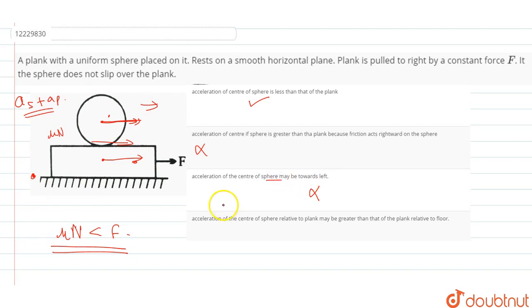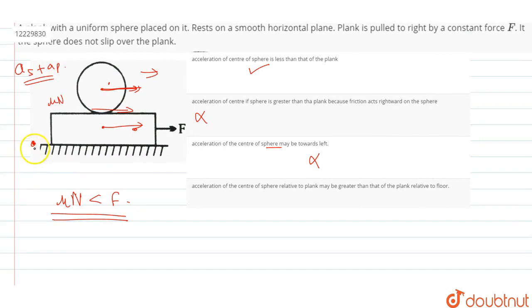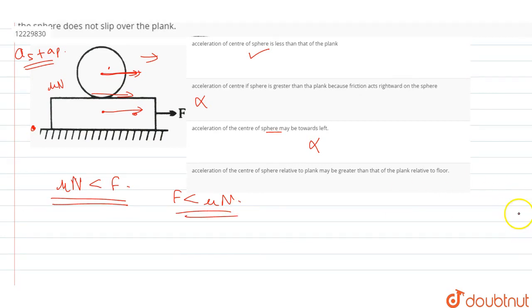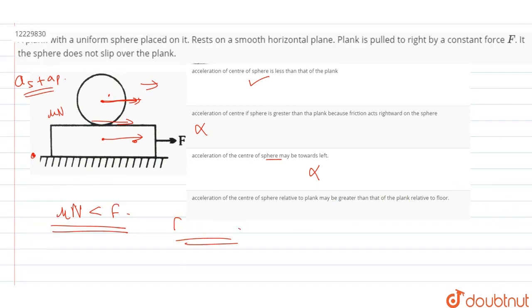Leftwards the direction of the sphere, the tip acceleration of the center of the sphere relative may be greater than that of the plank relative to the floor. They can jump friction. The force is less than me. So the acceleration of the center of sphere will be less than plank, so this option will be wrong. So only one option will be the case.